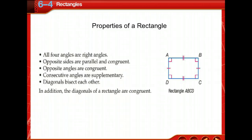Following are some properties and definitions of a rectangle: all four angles are right angles; opposite sides are parallel and congruent; opposite angles are congruent because they're all 90 degrees; consecutive angles are supplementary, so 90 and 90 is 180; and the diagonals bisect each other.